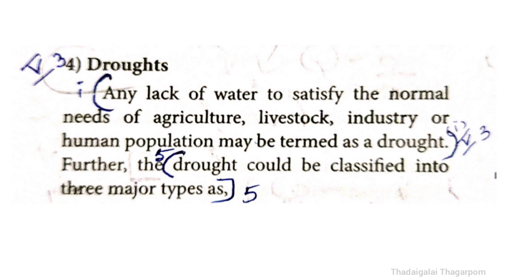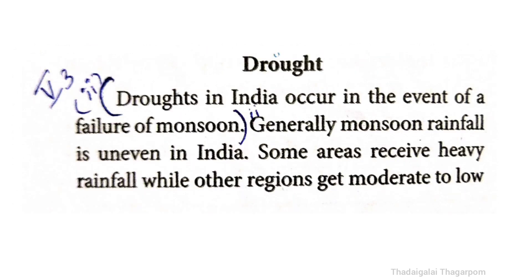For drought: any lack of water to satisfy the normal needs of agriculture, livestock, industry, or human population may be termed as a drought. Droughts in India occur in the event of a failure of monsoon.